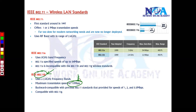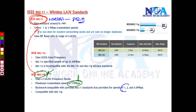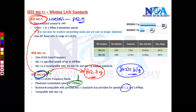802.11b is one of the first and most popular standards, operating at a throughput of 11 Mbps. It is also backward compatible with the original 802.11 standard — so even if you have wireless devices implemented with the previous 802.11, you can still operate with them, though the throughput will degrade to 1 or 2 Mbps automatically. Additionally, 802.11b is compatible with the next standard, 802.11g.